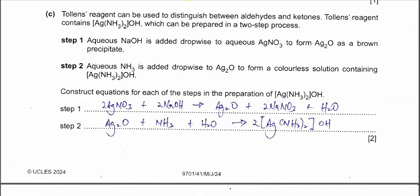Part c: Tollens' reagent can be used to distinguish aldehyde from ketone. This is an organic chemistry test. Tollens' reagent contains the complex ion [Ag(NH₃)₂]⁺ with hydroxide as counter ion. It is prepared in a two-step process. Step one: aqueous sodium hydroxide is added dropwise to silver nitrate to form silver oxide, a brown precipitate. Step two: aqueous ammonia is added dropwise to the brown precipitate to form the colorless solution containing this coordination compound.